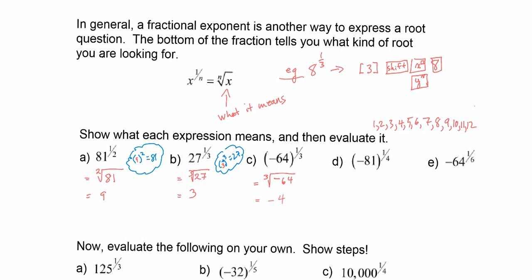For this next one, we write out what it means and then decide whether it exists. We have a negative number underneath the radical and the exponent is even — that's an impossible solution based on what we studied in the last lesson. So this does not exist, because anything to the power of 4 can only give a positive answer. That means this is impossible.